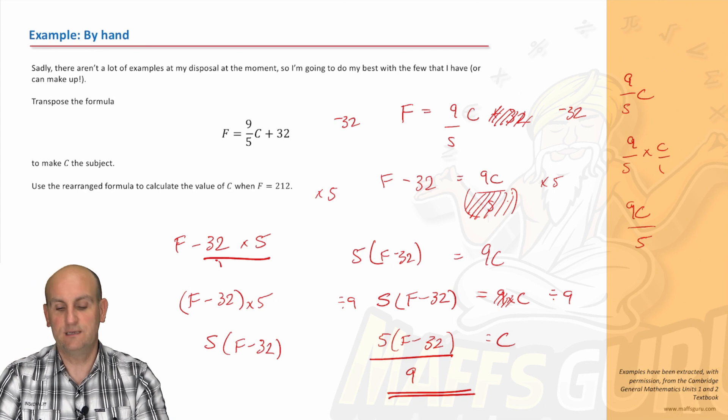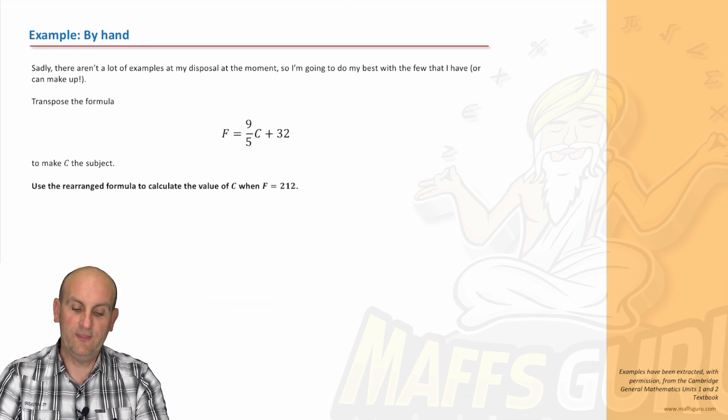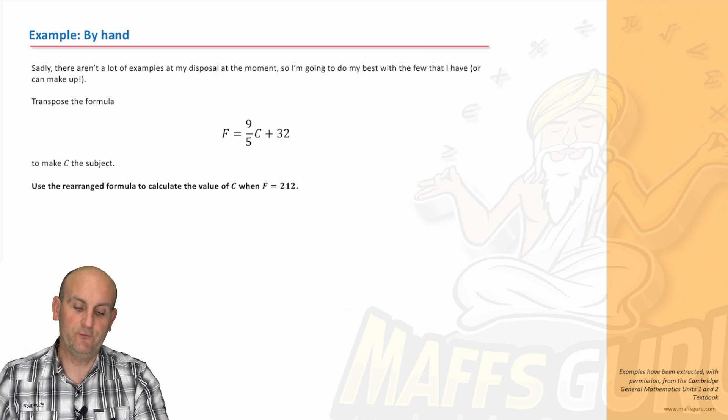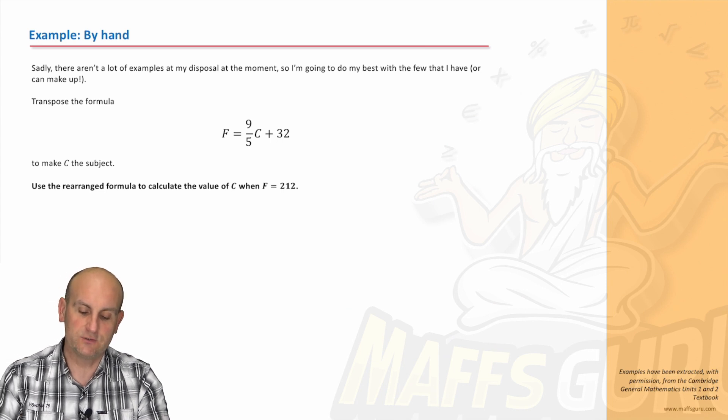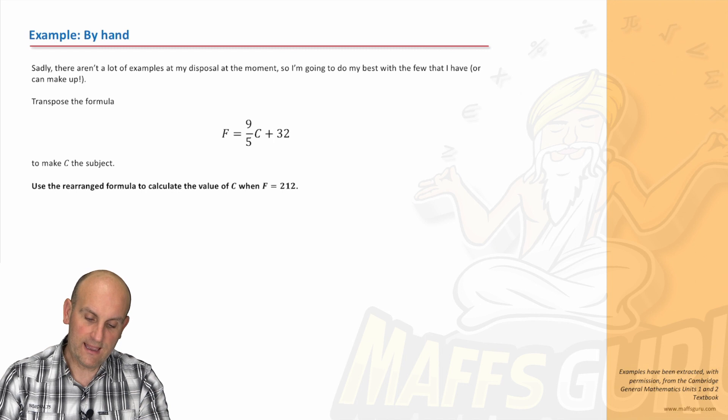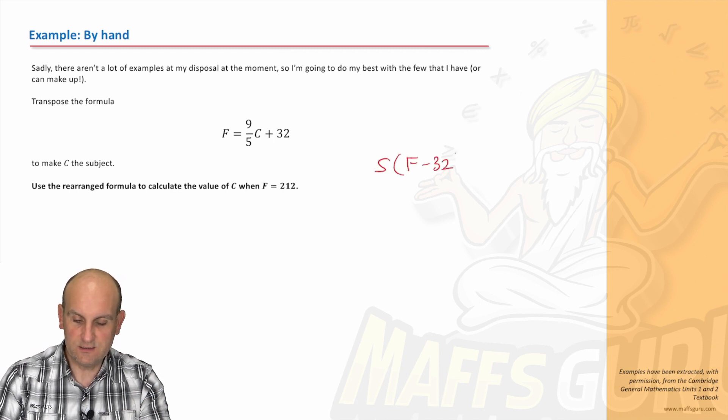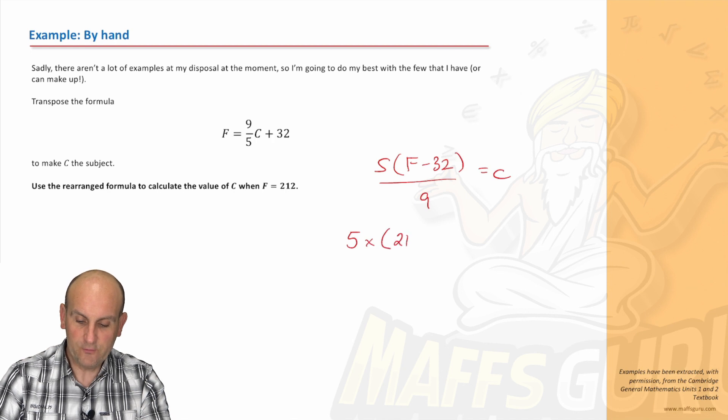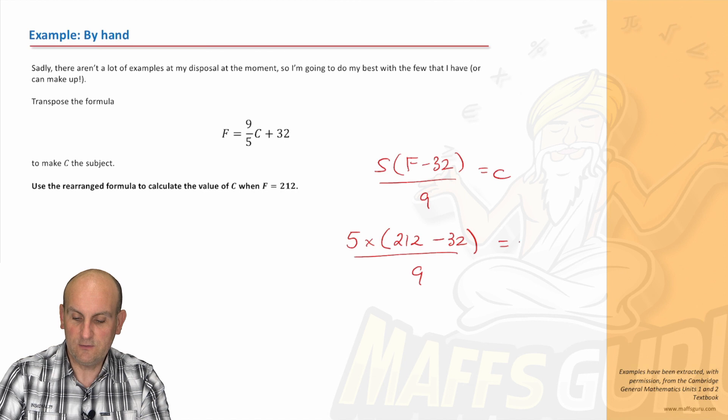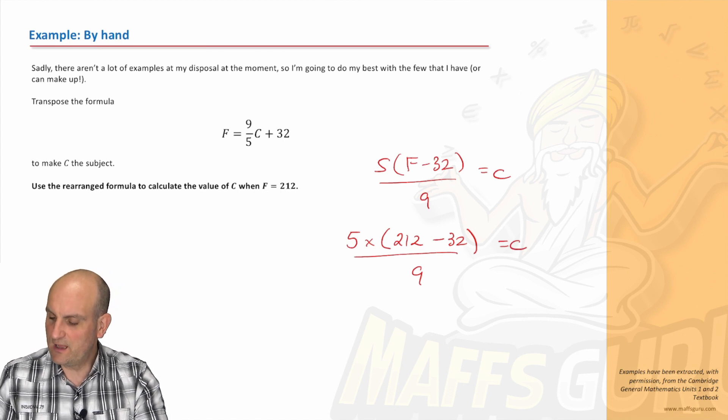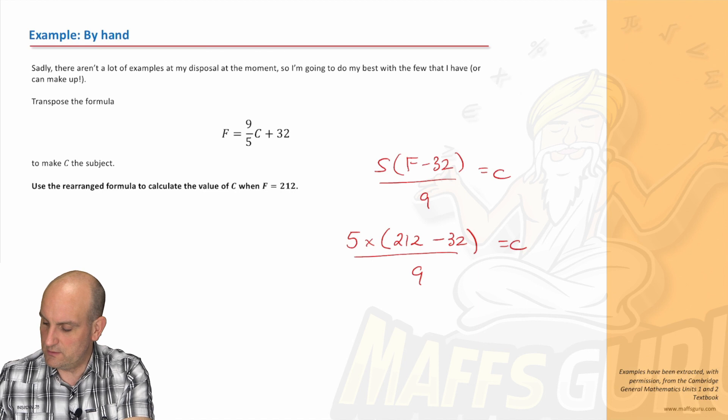But practice, and I promise you, practice will make perfect. Now when it then wants to go on, it says use the rearranged formula to calculate the value when F equals 212. So what did we have? We had 5 lots of F minus 32 divided by 9 is equal to C. Now they've given me the value of F, so I'm going to do 5 times 212 minus 32 divided by 9 equals C. I'm going to put it into my calculator.